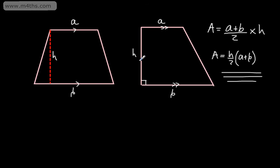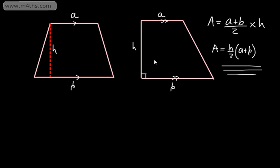What I'm going to do is find the area of two different trapezia using this method, and then look at an alternative method by splitting these into triangles and rectangles if you're not comfortable with the formula. It would be good if you learned it this way, but you can often get away with it by using rectangles and triangles.